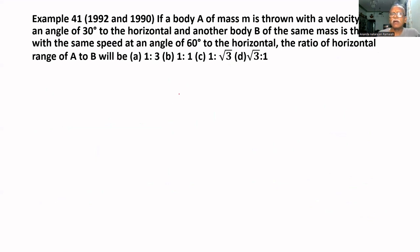If body A of mass M is thrown with velocity V at an angle of 30 degrees to the horizontal, and another body B of the same mass is thrown with the same speed at an angle of 60 degrees to the horizontal...